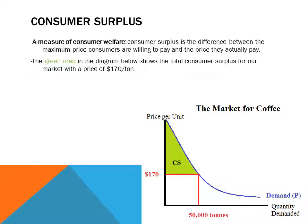One concept related to the law of demand is consumer surplus. Consumer surplus is a measure of consumer welfare, and it is the difference between the maximum price consumers are willing to pay and the price that they actually pay. So if you're a roaster in a coffee market and you're willing to pay $200 per ton of coffee, but the market price is $170, then your consumer surplus is $30. The green area in the diagram shows total consumer surplus for our market at a price of $170 a ton — the difference between the maximum amount consumers are willing to pay and the actual market price, added up across all quantities sold.